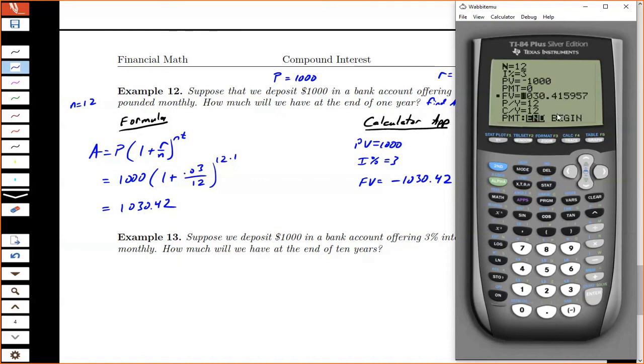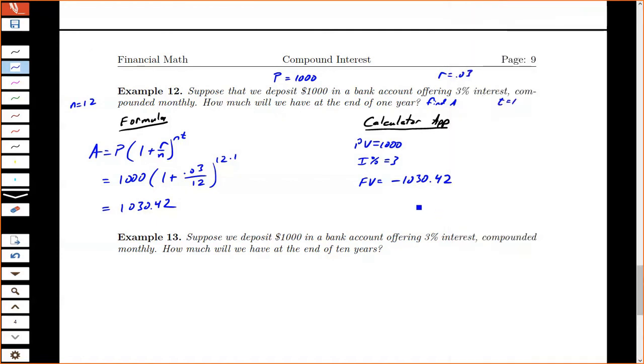So we would just say, oh okay, how much will we have at the end of the year? We'll have $1,030.42.